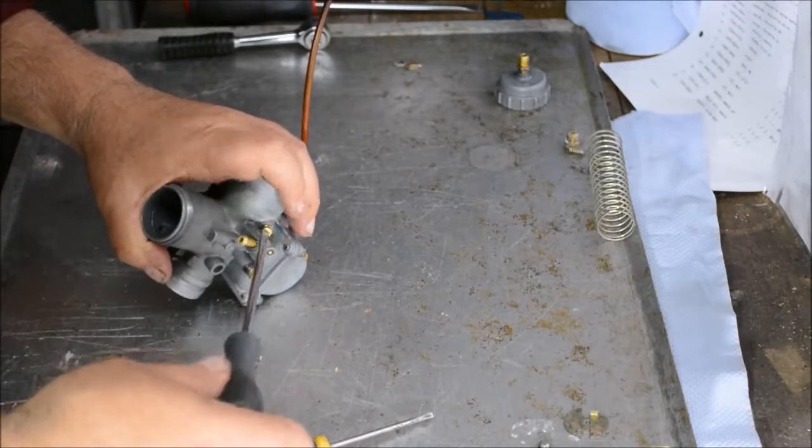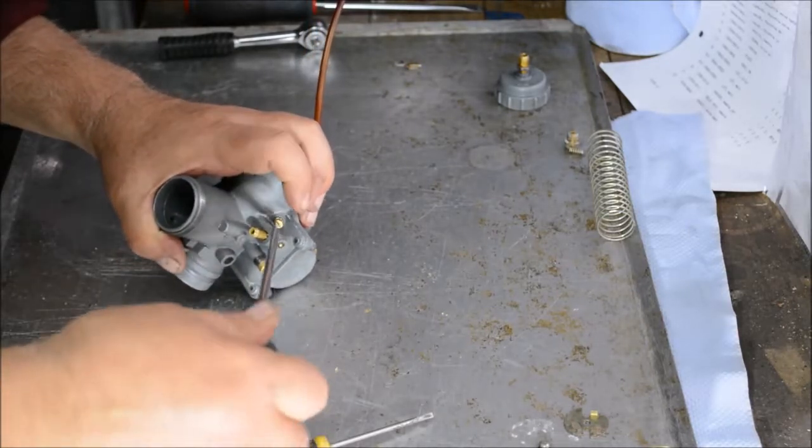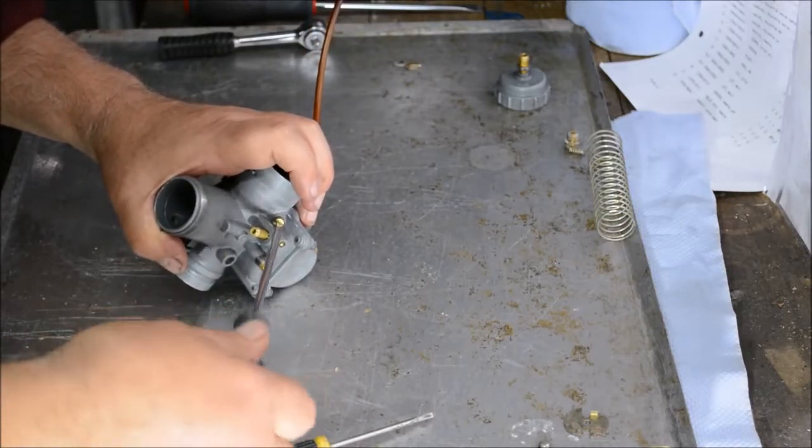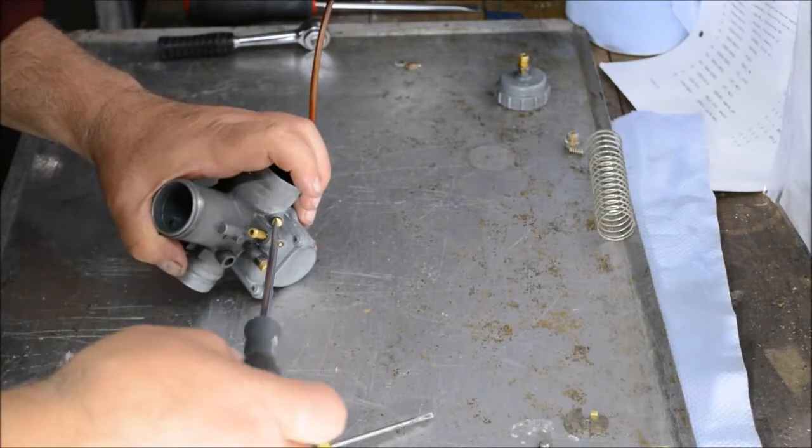Again, that's to stop it moving around once it's in place and once it's adjusted. We'll just tighten it back down for now. As I say, we will do the adjustment when it's back on the bike. Now we're doing the choke.